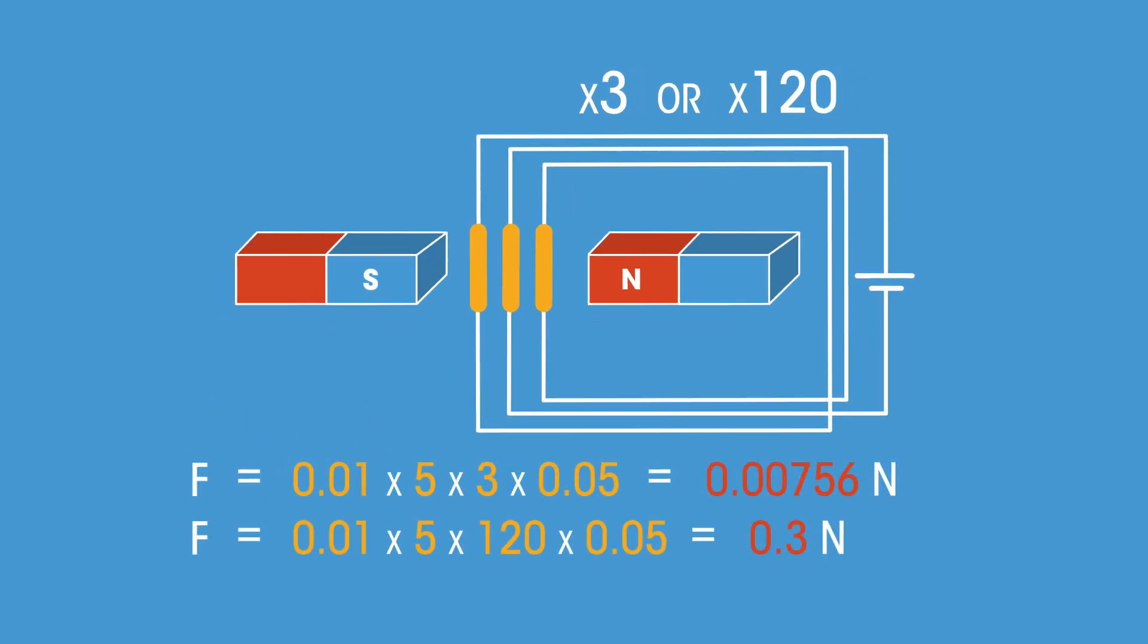So that's how current, magnets, and length relate to each other in an equation.